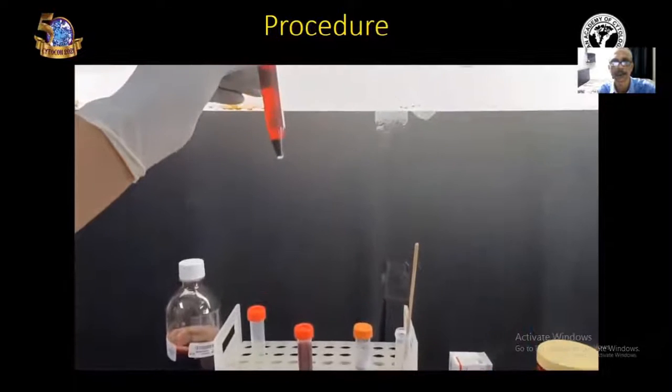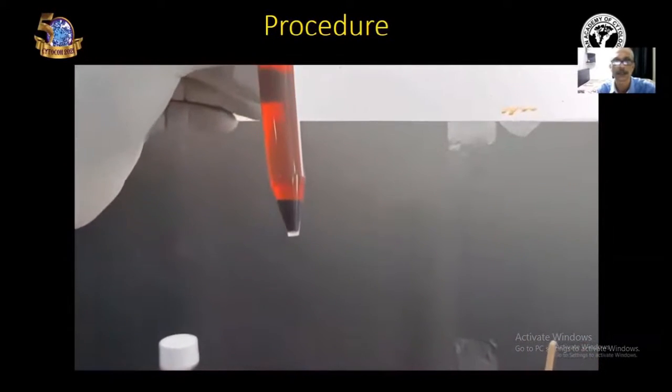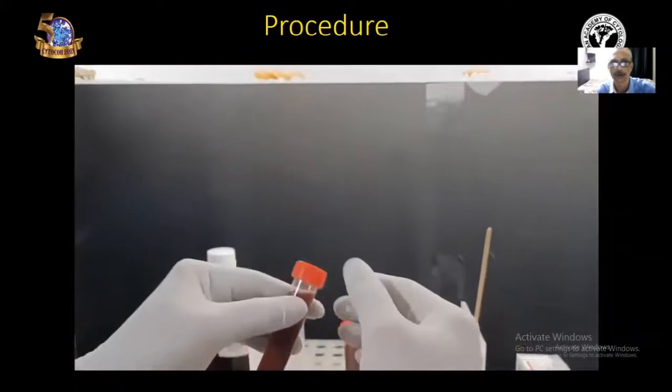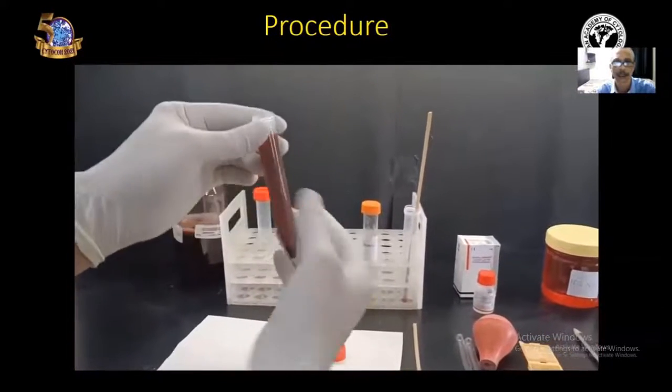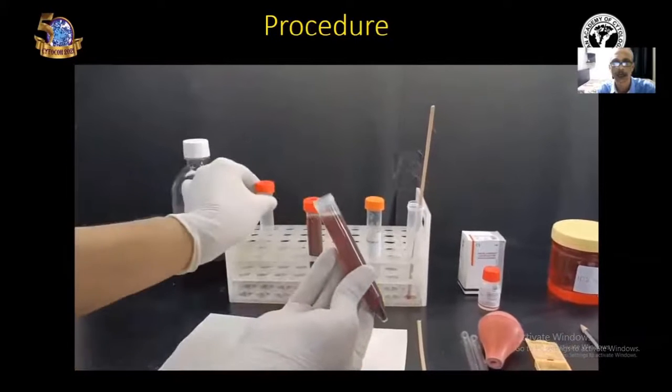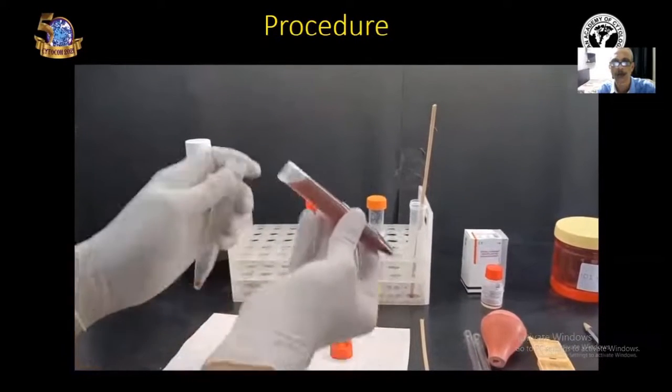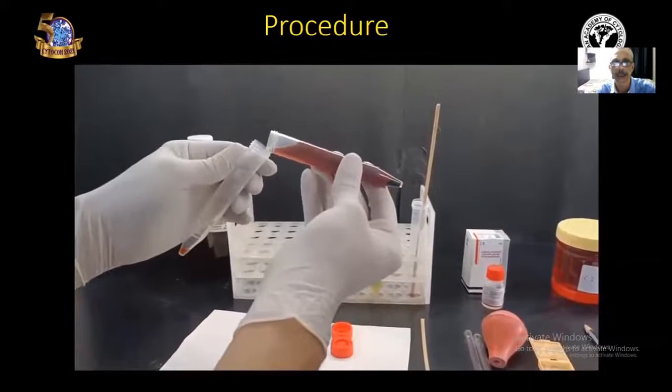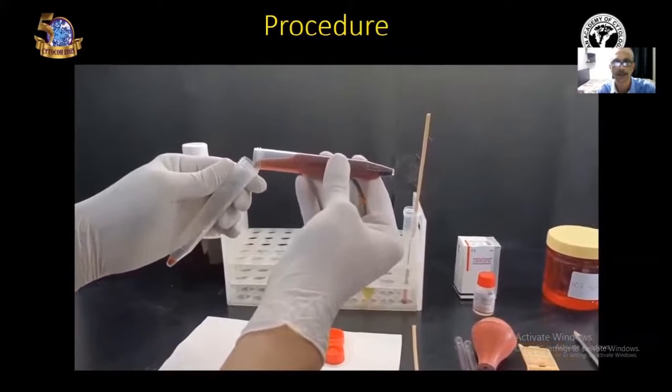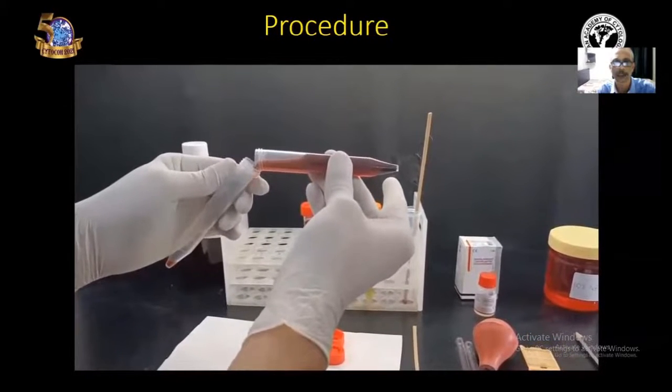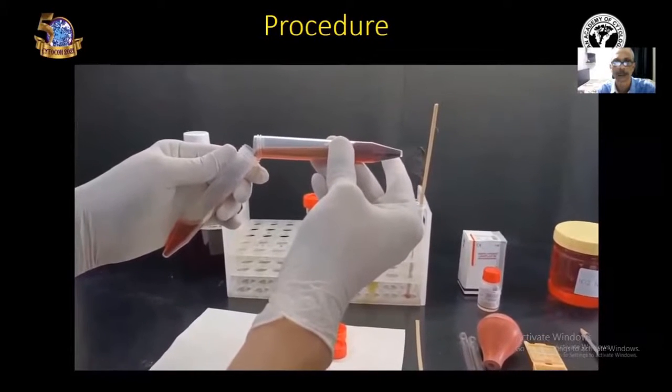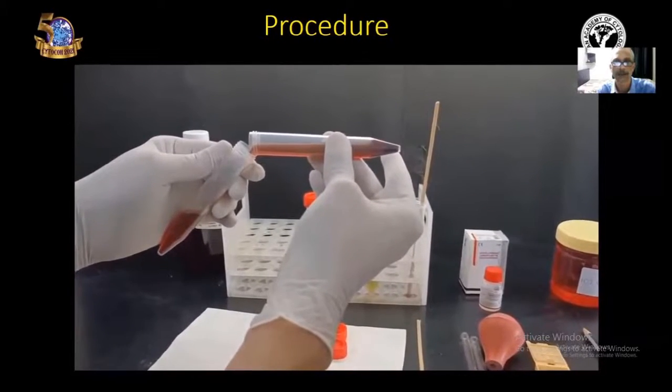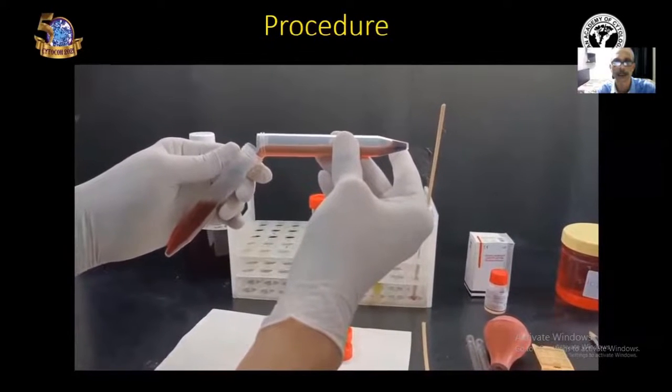Now, the next step is separating the sediment from the supernatant. We have to open the tube and take a new test tube, and slowly decant the supernatant very carefully without interrupting the sediment at the bottom. Care has to be taken that the sediment is not disrupted while transferring the supernatant.